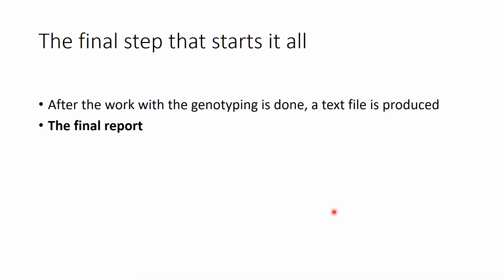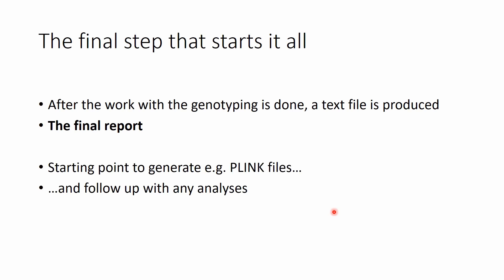At the end, when all the analysis and rearrangements are done, a text file is produced — this is the famous final report. This is the large text file that we typically get onto your computer from the genotyping company. The first step would be to rearrange it to generate some PLINK files and then follow up with further analysis. More about the final reports and means of rearrangement are coming in the following videos in this Genomics Bootcamp series. If you're interested, I encourage you to subscribe. Thank you for your time and have a nice rest of the day!